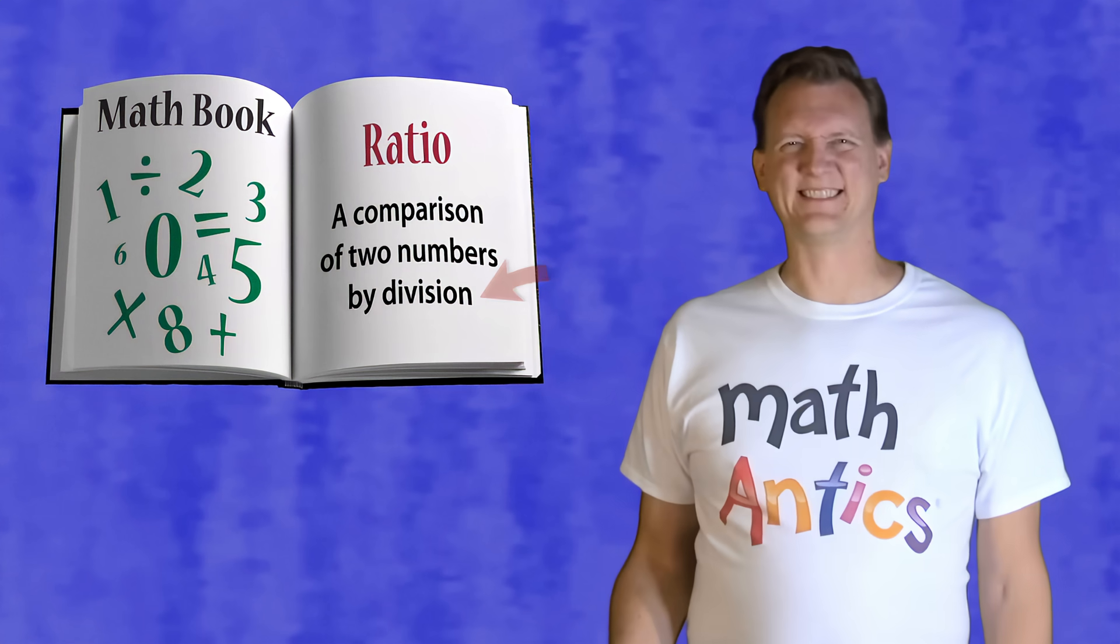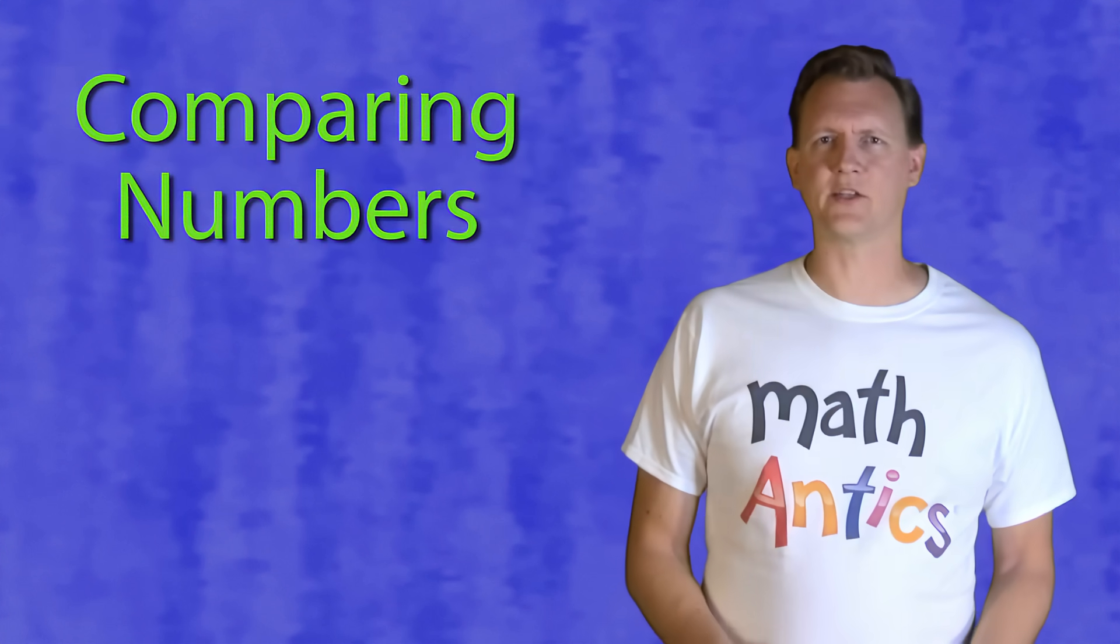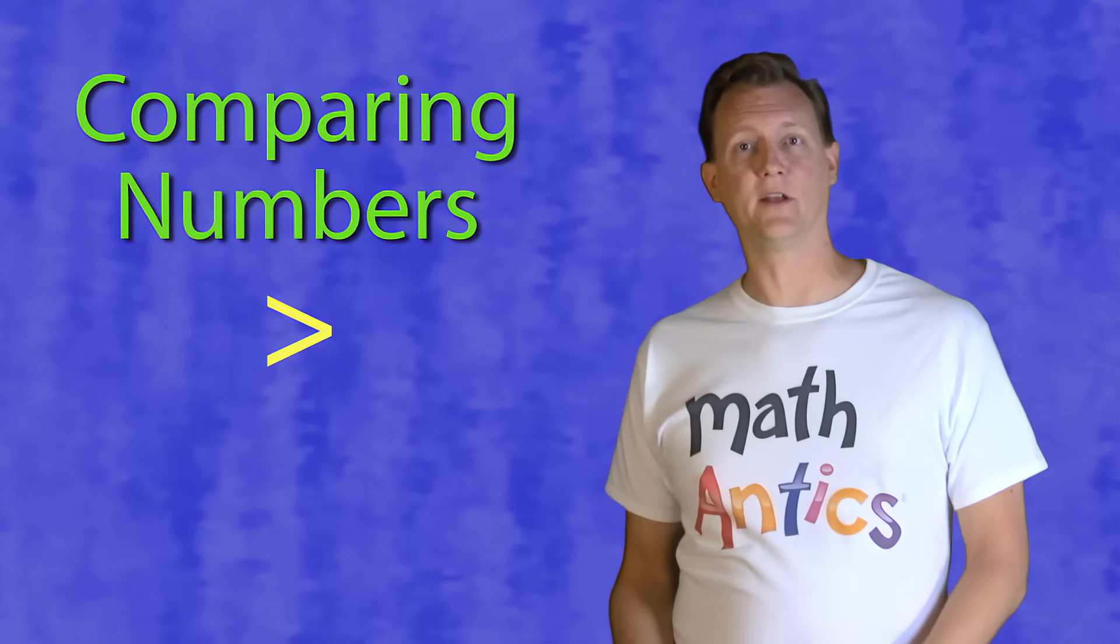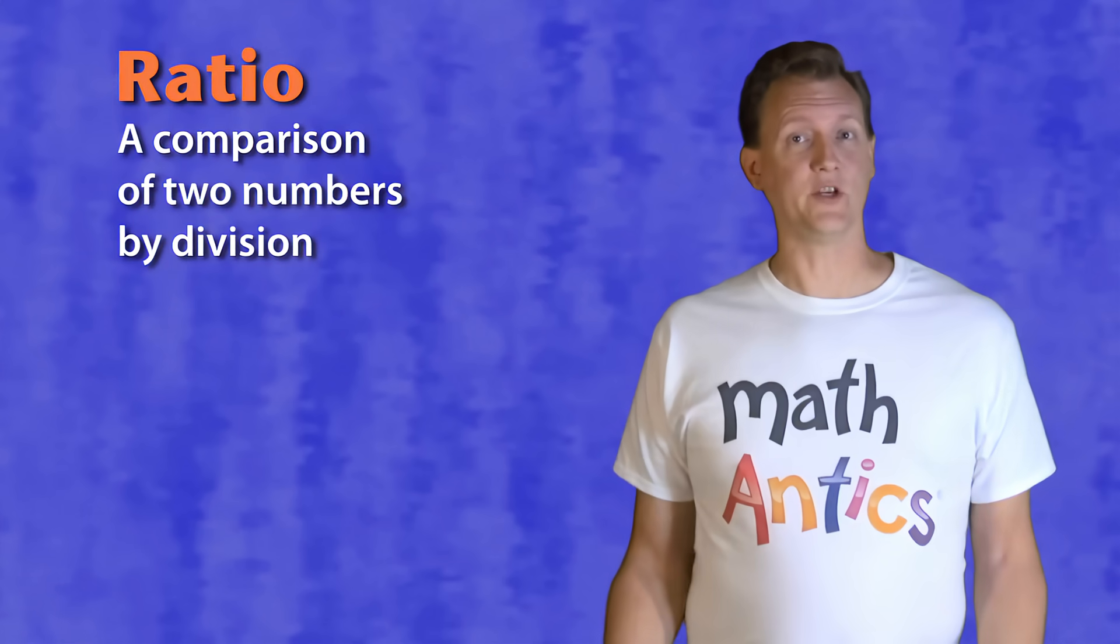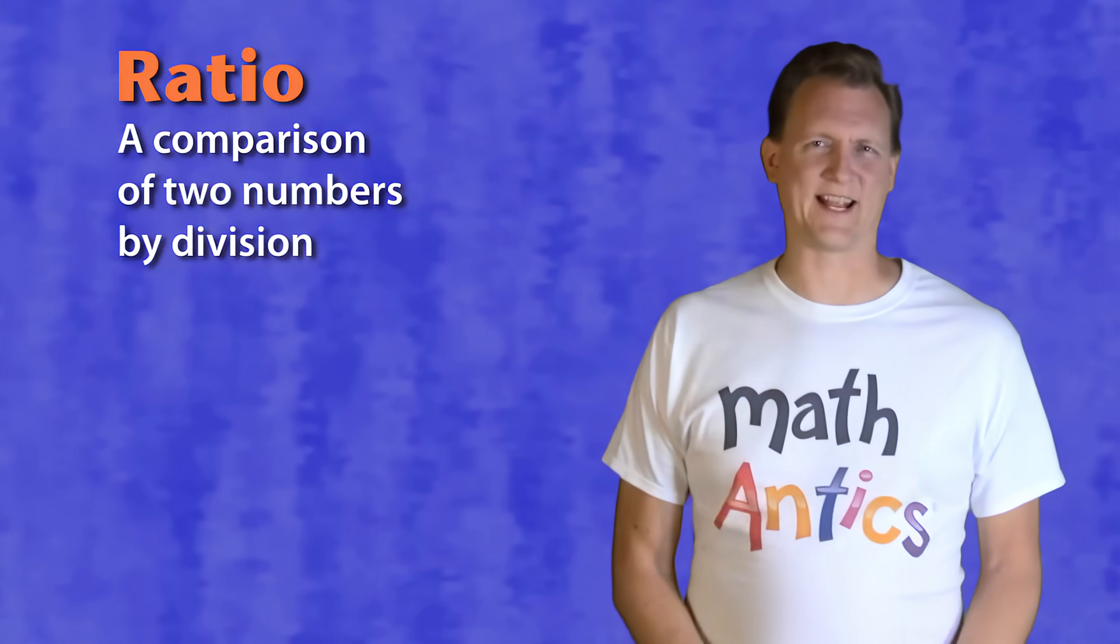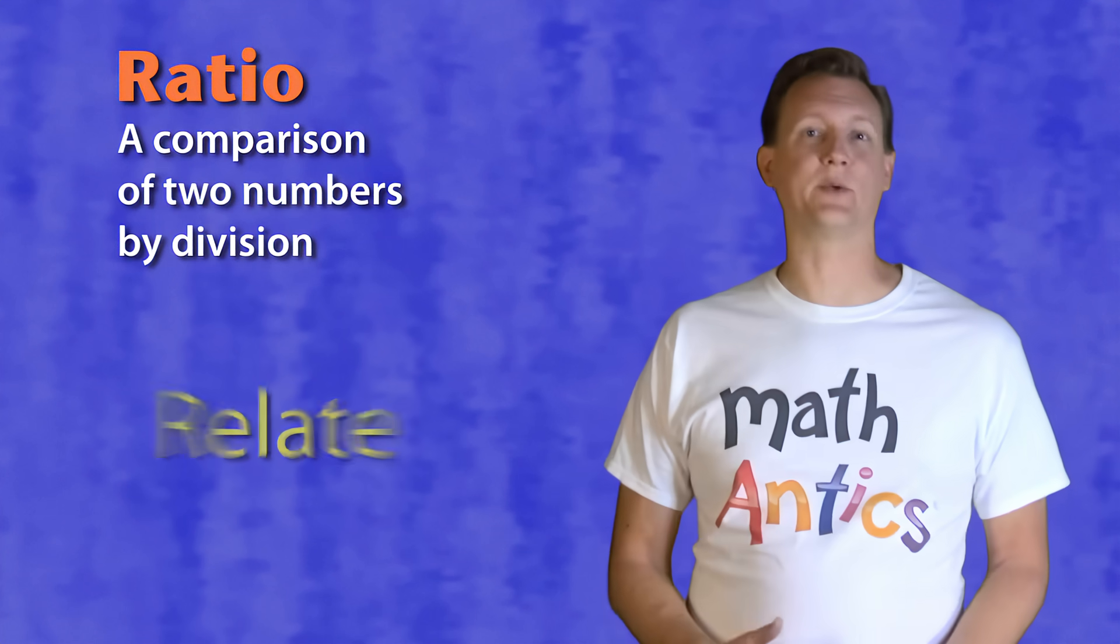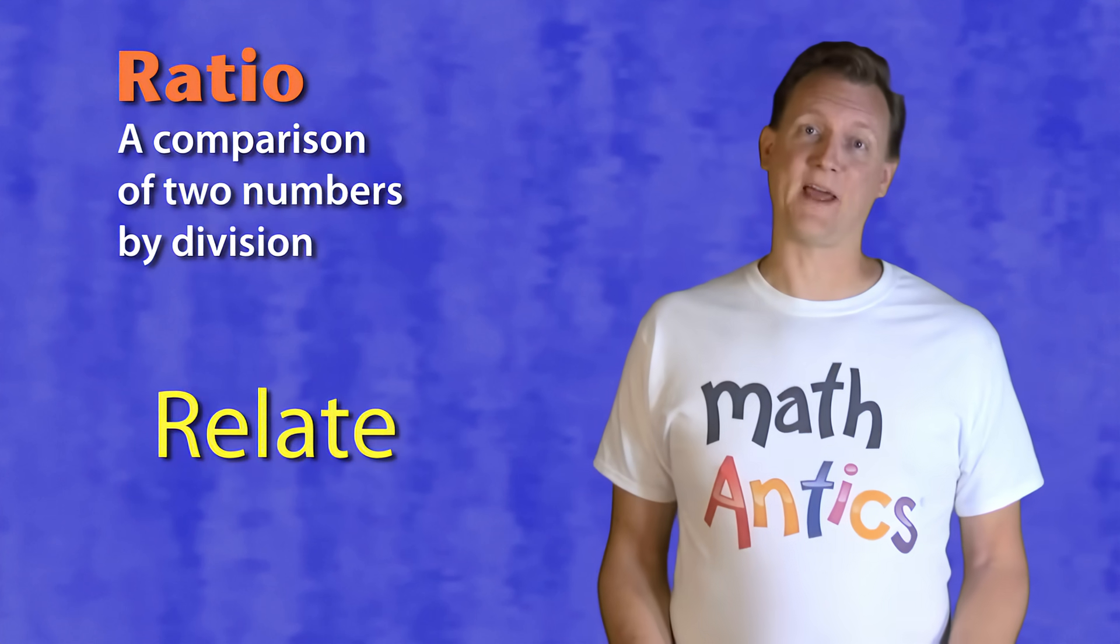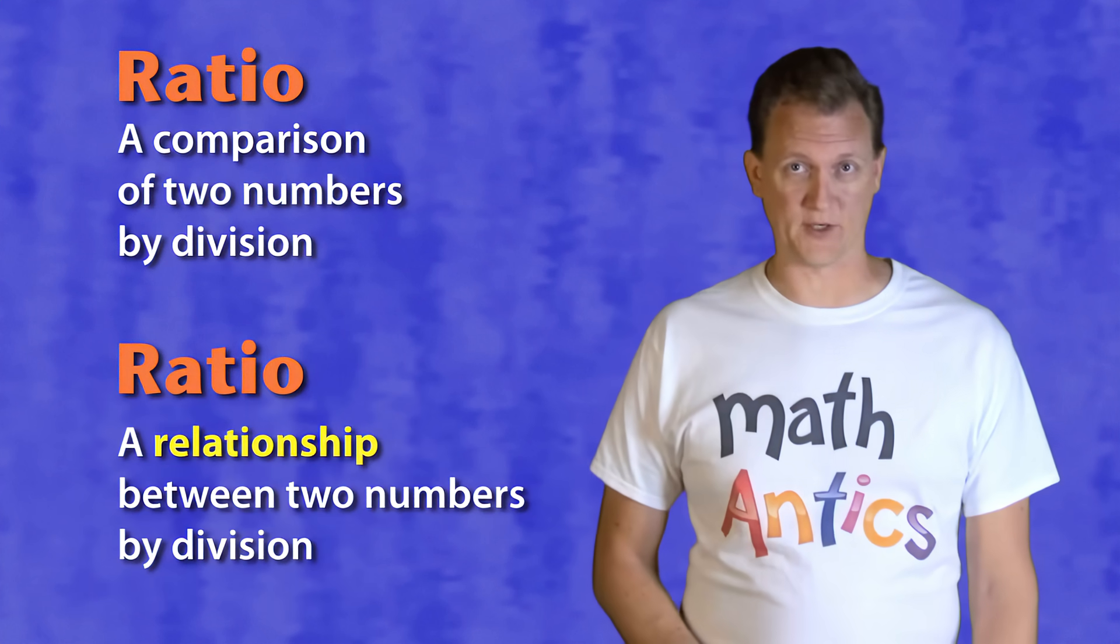Well, that's true, but it's also confusing. Most of us think of comparing numbers as deciding if a number is greater than, less than, or equal to another number. But with ratios, we're not trying to compare numbers like that. Instead, we're trying to see how two numbers relate to each other. At Math Antics, we like to think of ratios as a relationship between two numbers by division.